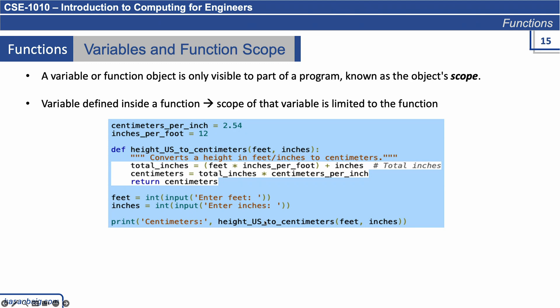Print itself is a function used to print something on the screen. What we are doing is passing a function call rather than just a variable. height_us2centimeter is the function name defined here, and we are passing the values feet and inches. It takes two parameters — feet and inches — and converts a height. Now, feet times inches_per_foot: inches_per_foot is not defined inside this function. Whatever we define outside the function is visible to the function.